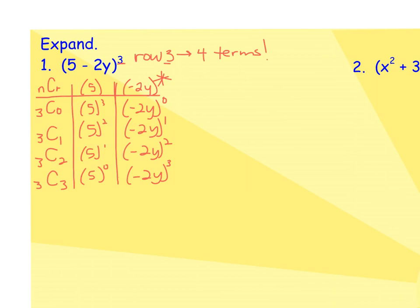Now we just have to evaluate. We've got this first group here. 3c0 is 1. 5 to the third power is 125. And negative 2y to the zero power is also 1, times 1. And that equals 125. I'd like you to actually try the rest of these. Evaluate each parenthesis individually, and then see if you can multiply them together. Some answers will be positive, and some will be negative. Press play when you're ready.